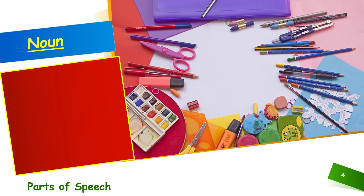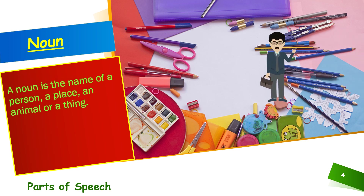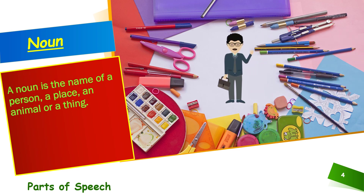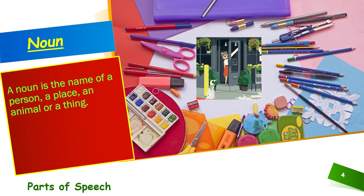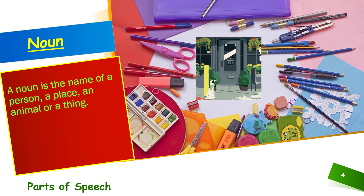A noun is the name of a person, a place, an animal, or a thing. Have a look at this picture. What can we see? I can see a house, a girl, a dog, and I can see some plants too. A boy is also coming out. So, all these are nouns.